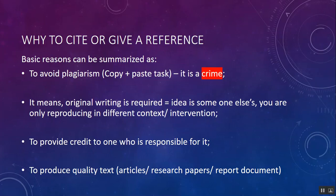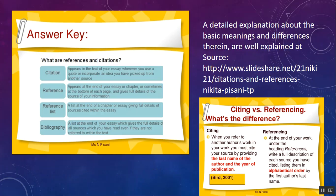We use other authors' text or images or whatever resources when producing our own work. To produce quality text — whether articles for newspapers or magazines, research papers for journals, professional reports, or academic reports for projects or research work — we need to provide proper citation and references.